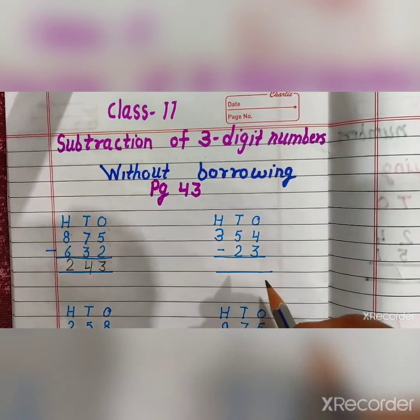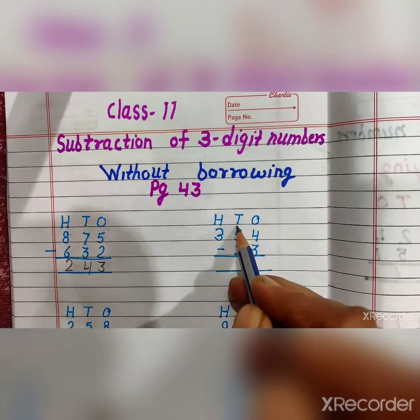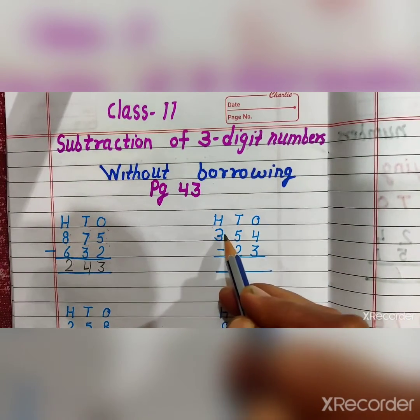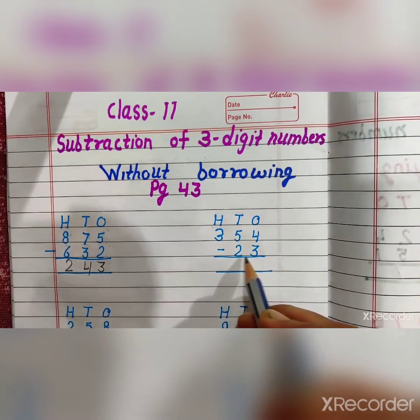Second sum. First of all, you will write ones, tens and hundreds. The problem is 354 minus 23.